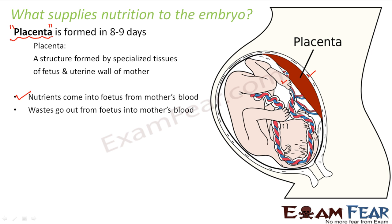The placenta acts as a connection between the two — all good things come into the fetus from the mother's blood through the placenta. Similarly, all waste materials go out from the fetus into the mother's blood through the placenta, because the fetus is a living organism undergoing life processes such as digestion, respiration, and excretion. Those waste materials are passed to the placenta, then to the mother's blood, and excreted through the mother's excretory system. The placenta acts as a link between the fetus and the mother.